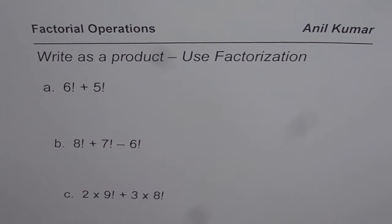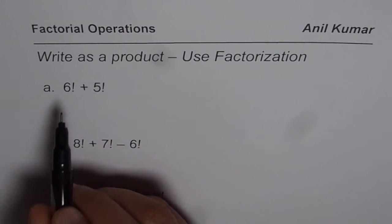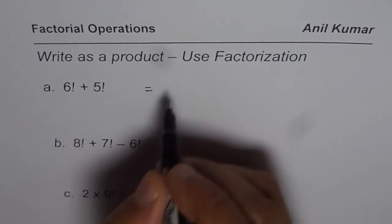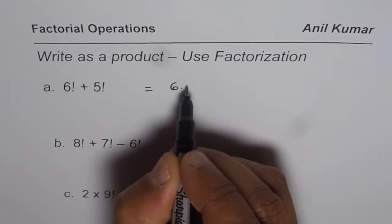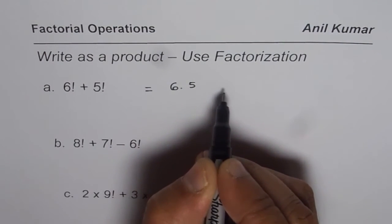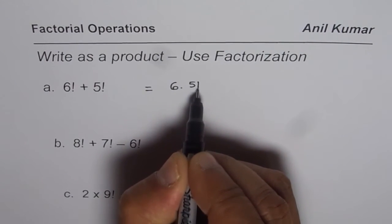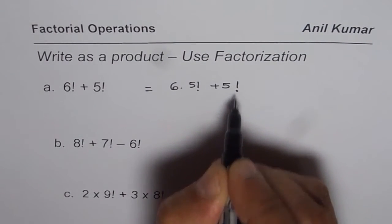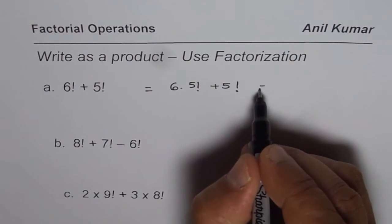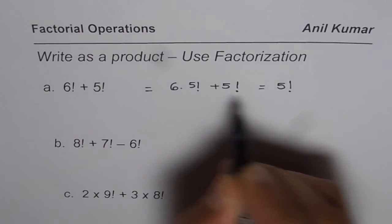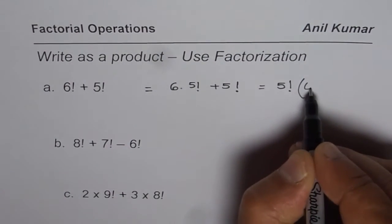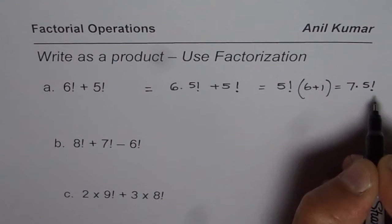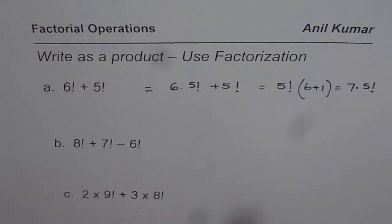Let us see how to write these terms, which are addition or subtraction, as multiplication. First one is 6 factorial plus 5 factorial. What is 6 factorial? 6 factorial could be written as 6 times 5 factorial. Plus 5 factorial. Now we have 5 factorial as a common factor, so we are left with 6 plus 1. So we could write this as 7 times 5 factorial — it is in the product form.